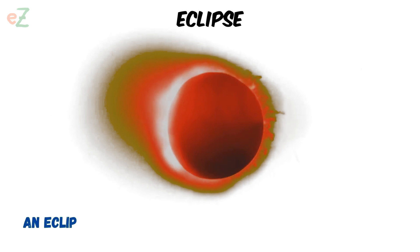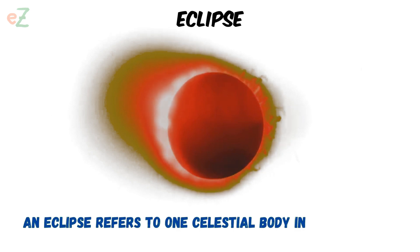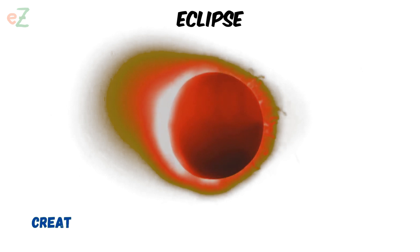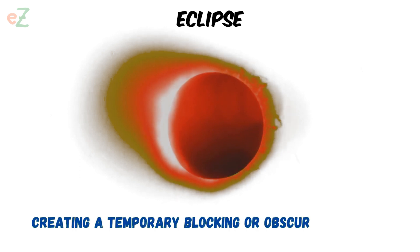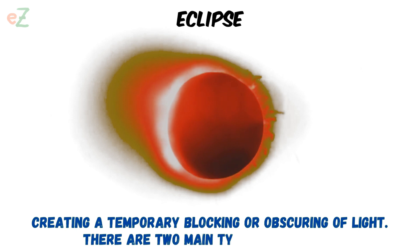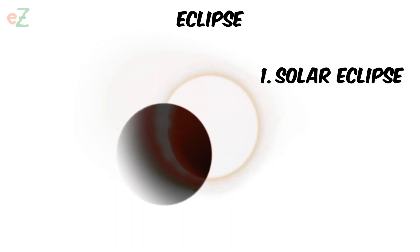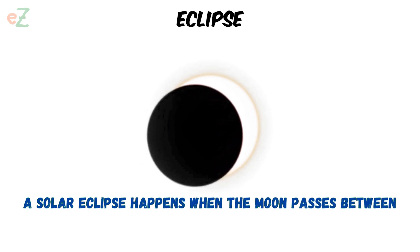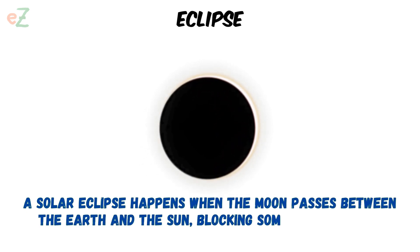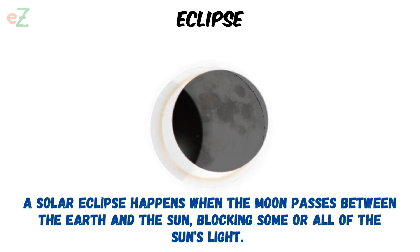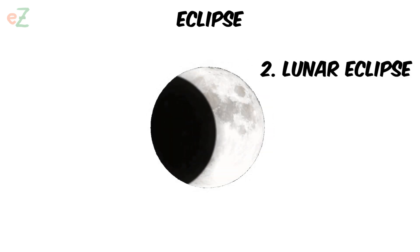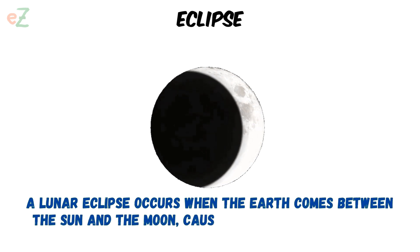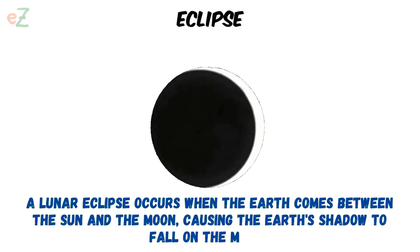Eclipse. An eclipse refers to one celestial body in space moving into the shadow of another celestial body, creating a temporary blocking or obscuring of light. There are two main types of eclipses. Solar eclipse: a solar eclipse happens when the moon passes between the earth and the sun, blocking some or all of the sun's light. Lunar eclipse: a lunar eclipse occurs when the earth comes between the sun and the moon, causing the earth's shadow to fall on the moon.